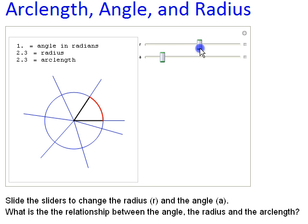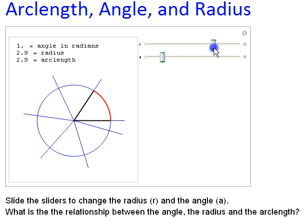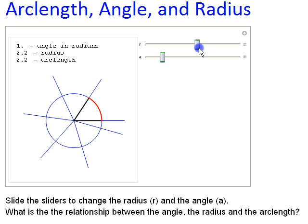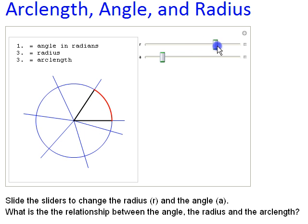Two and two right there, 2.1, 2.4. With one radian, the arc length and the radius are the same.